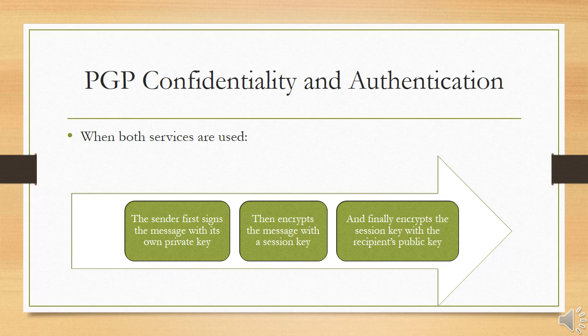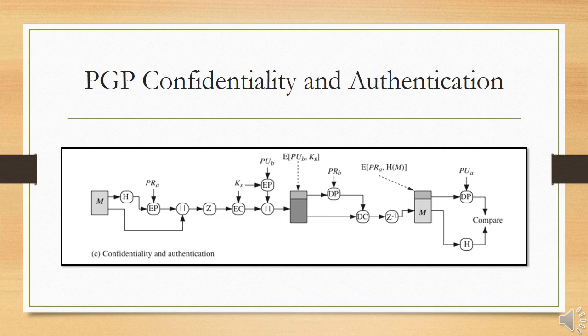For PGP confidentiality combined with authentication, the sender first signs the message with their own private key, then encrypts the message with a session key, and finally encrypts the session key with the recipient's public key, achieving both confidentiality and authentication. Both services may be used for the same message: first, a signature is generated for the plaintext message and prepended to it. Then the plaintext message plus the signature is encrypted using CAST-128, IDEA, or Triple-DES, and the session key is encrypted using RSA or ElGamal.